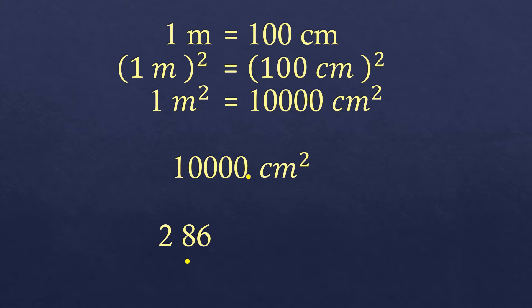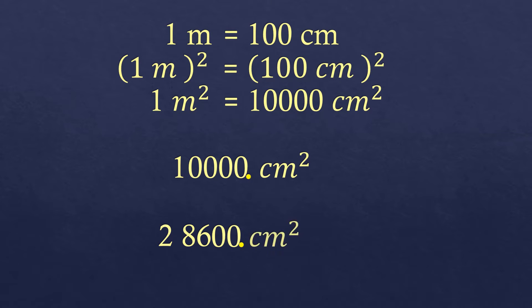So the correct method is to move the decimal point to the right four times, then fill in any empty spaces with zeros. For example, 2.86 square meters: moving the decimal point four places to the right gives us 28,600 square centimeters.